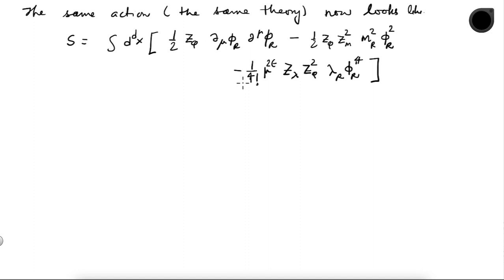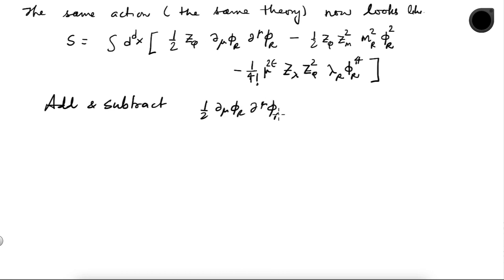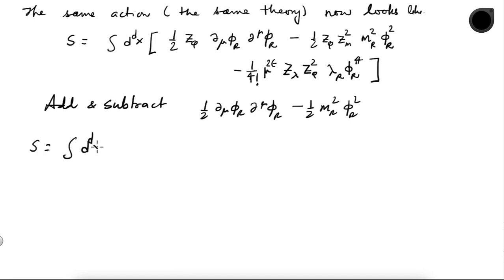This action does not look like what we are used to, so I will add and subtract the following to it without altering it: half del-mu phi_r del-mu phi_r minus half m_r-squared phi_r-squared. This is in terms of renormalized fields and the renormalized mass parameter. By adding and subtracting the same thing, the action is unchanged.